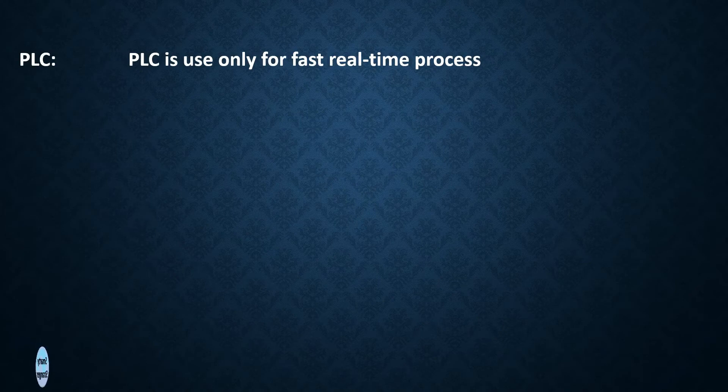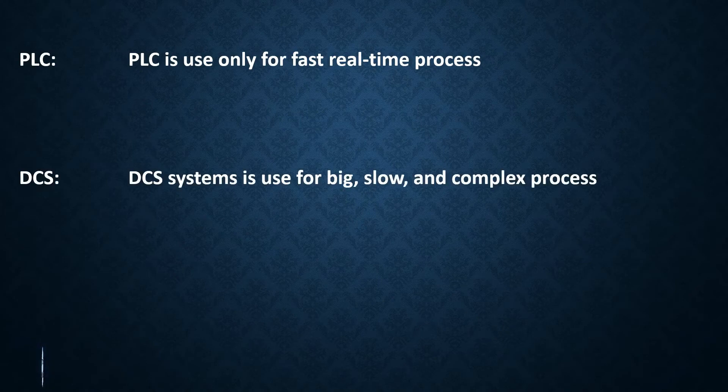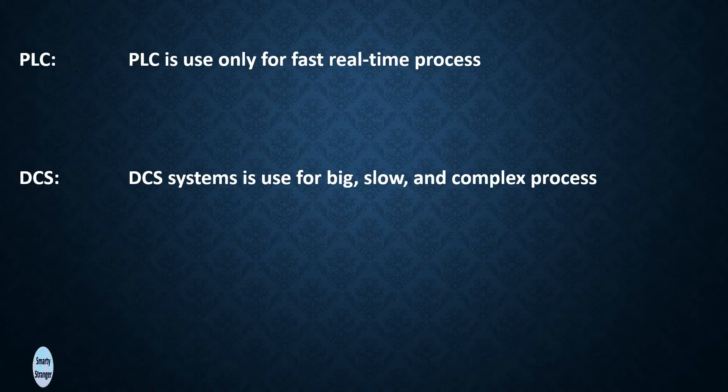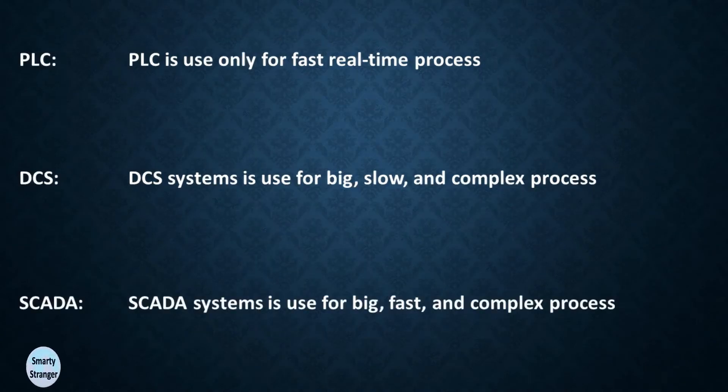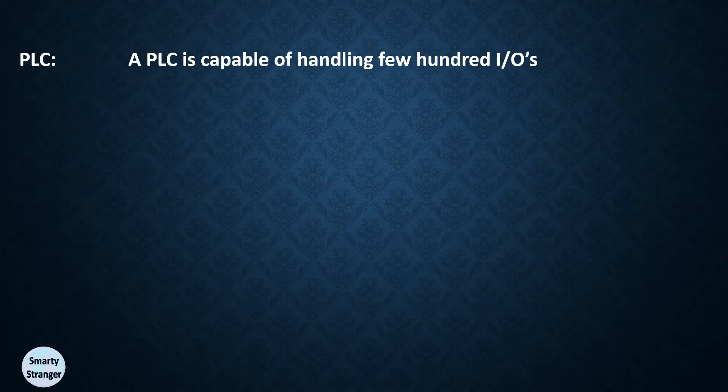PLC is used only for fast real-time processes. DCS systems are used for big, slow, and complex processes. SCADA systems are used for big, fast, and complex processes.